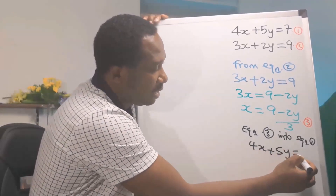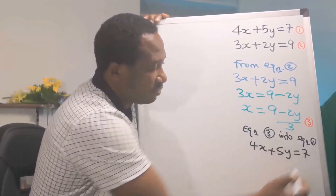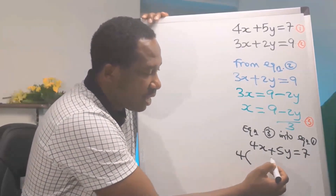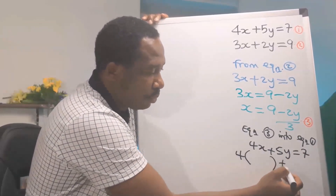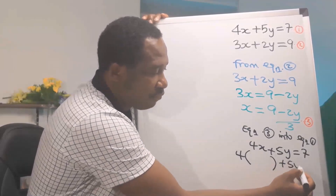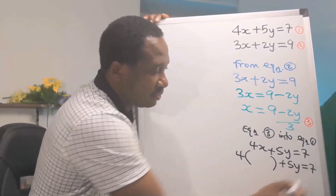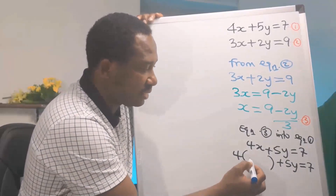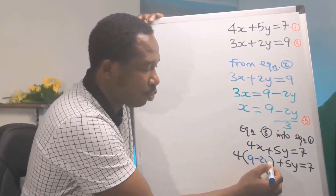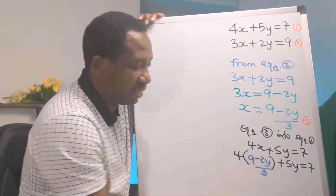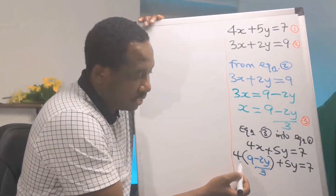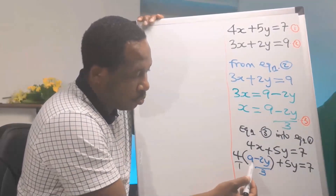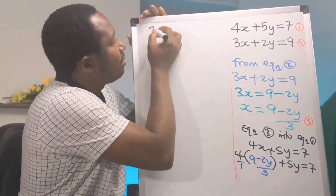Next, I will substitute equation 3 into equation 1. In equation 1 we have 4x + 5y = 7. I will replace 4x with the value for x, which is (9 − 2y) / 3, giving us 4 × (9 − 2y) / 3 + 5y = 7.